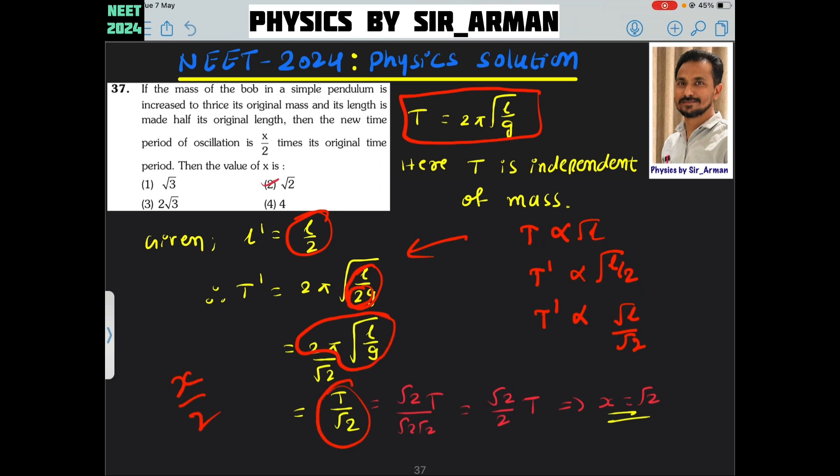But in the option is given x by 2. So to bring 2 here in the denominator, I am multiplying and dividing this term by root 2 and root 2. So root 2 into root 2 is 2. So here you can see it is root 2 into t by 2, right.